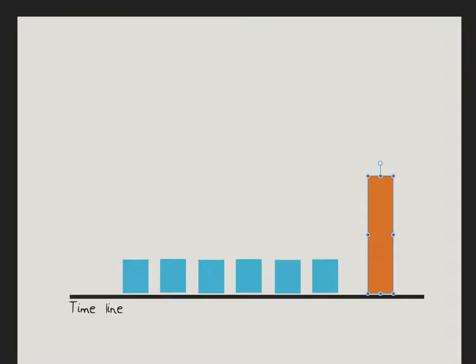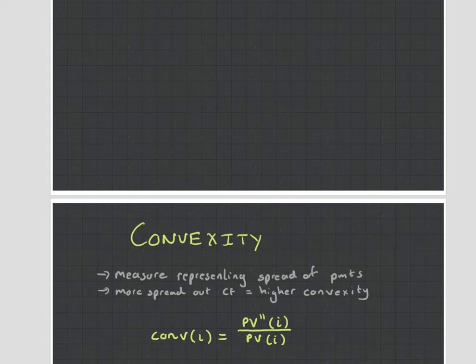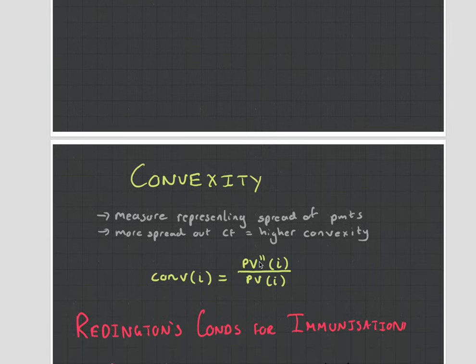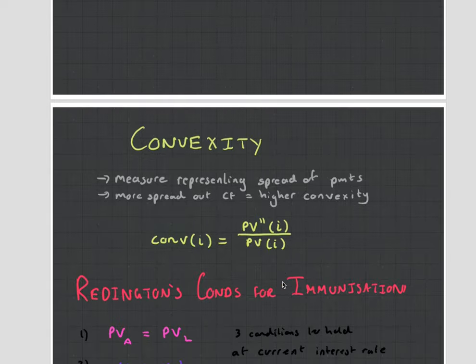The first time you're looking at immunization, it is weird and a little bit spacey. But the more examples you do, you'll click and it'll all make sense. It is an easy part of the course in the sense that you just need to be strong mathematically — you need to know how to take second derivatives. Convexity is the second derivative, and volatility, as we saw, was the first derivative. In the exam, they may ask you to list limitations and you can get two easy marks by remembering those five points.